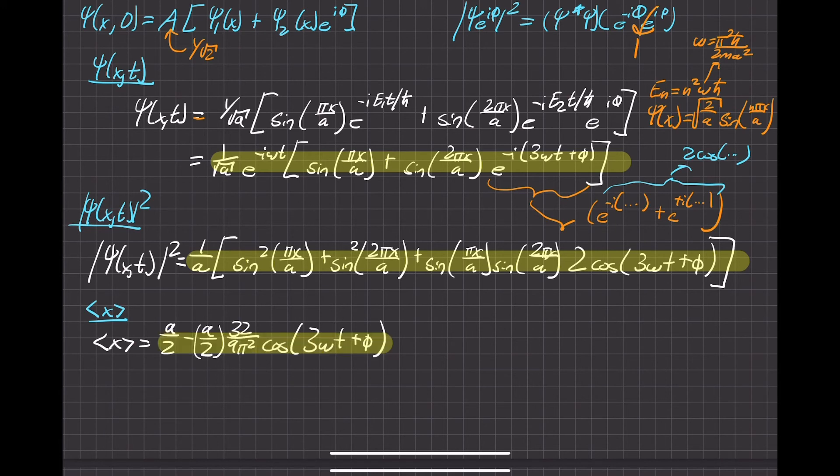Now, the problem also asks us to make some physical interpretation using different values for phi. So when phi equals pi over 2, and it's frozen at t equals 0, we'll just do that. And whenever we throw that in there, this whole term goes to 0, this goes to pi over 2. So this whole cosine is cosine of pi over 2.